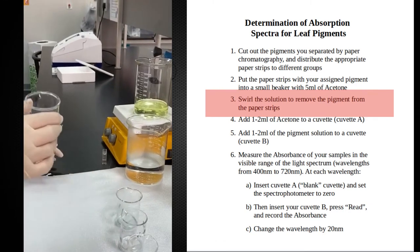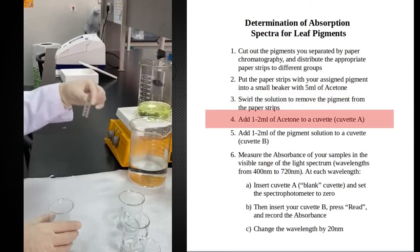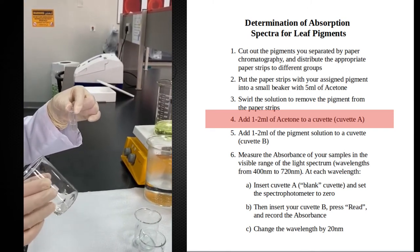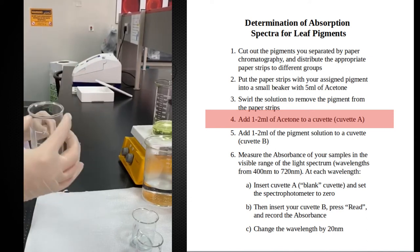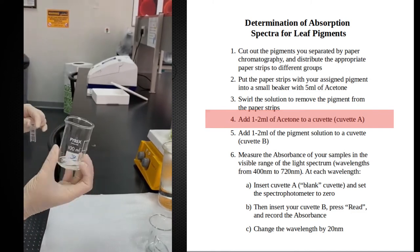Probably I can start with the chlorophyll A. For this measurement, I need a cuvette of acetone as a blank. Why acetone? Because I have dissolved the color in acetone. So this cuvette, I'm going to use it as a blank and I'm going to measure the absorbance of light of chlorophyll A at a different wavelength.